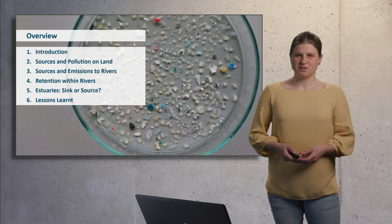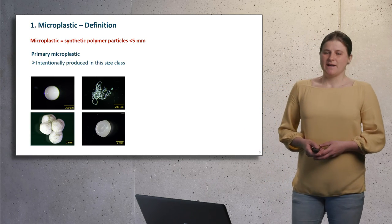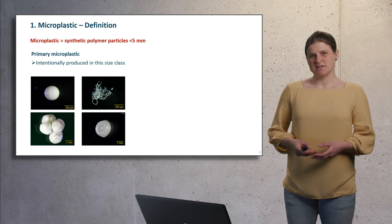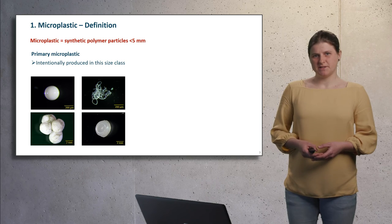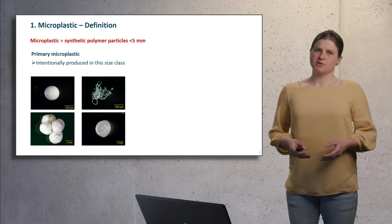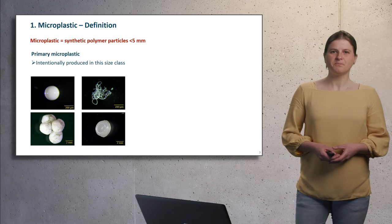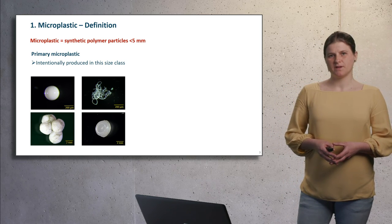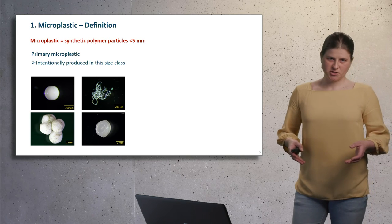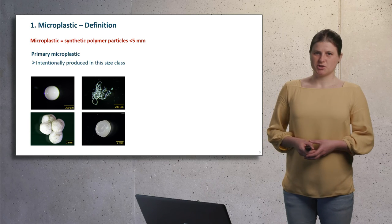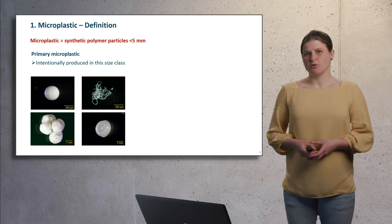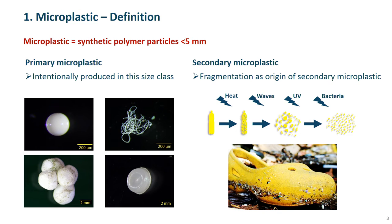Let's start with a short introduction into the topic. Microplastic is one category of plastic litter and defined as synthetic polymer particles less than 5 mm in size. The lower size limit is commonly agreed to be one micrometer but depends on the sampling and analysis methods. Depending on their origin, microplastics are broadly categorized in two categories. Primary microplastics are intentionally produced within the size range to be applied in a wide range of applications, for example microbeads in cosmetic products. Through biological, chemical or physical processes, larger plastic litter is slowly degrading in the environment and leads to so-called microplastics of secondary origin.